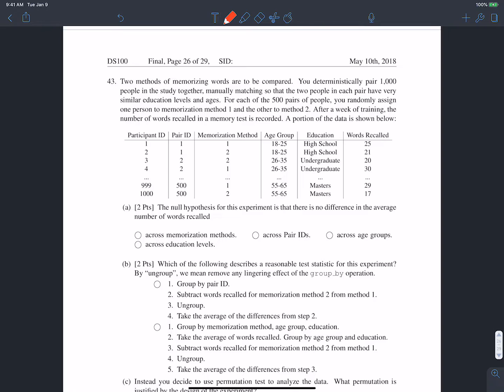OK, so that's true. 43, two methods of memorizing words are to be compared, and we're trying to find a null hypothesis for this experiment and trying to figure out different ways to test this experiment. So, first of all, the null hypothesis for this experiment is that there is no difference in the average numbers of words recalled blank. OK, and so this whole idea of pairing people off and making sure they're in the same age group and same education level is more of a semantic with regards to how we're testing our hypothesis, right? The actual hypothesis we're testing is the fact that there's no difference in average words recalled across memorization methods.